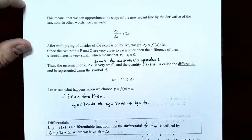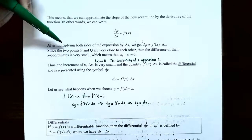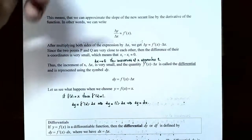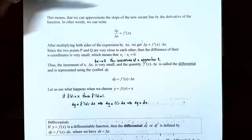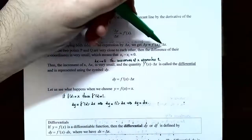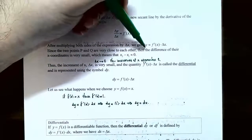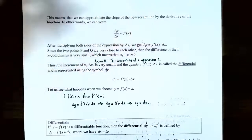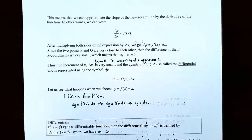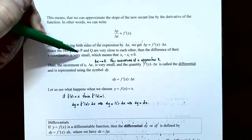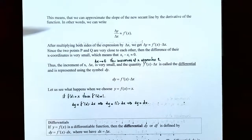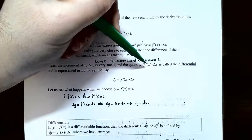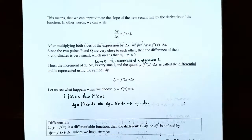So how does this help us calculate what are called differentials? Multiply both sides by delta x to clear the denominator. You'll have delta y on one side and f prime of x times delta x on the other. The change in y is approximately the derivative of f evaluated at x times the change in x. Since the points P and Q are really close, delta x is very small.